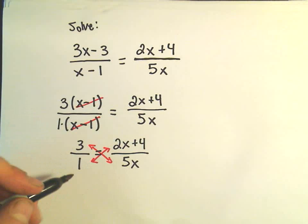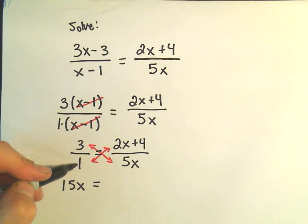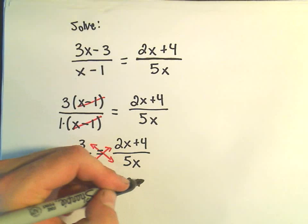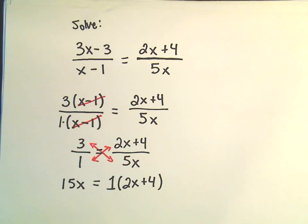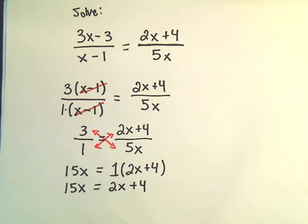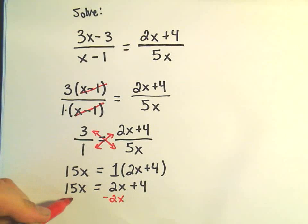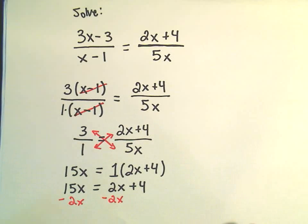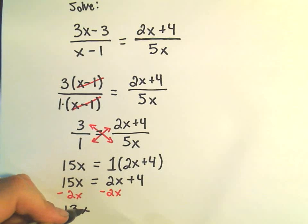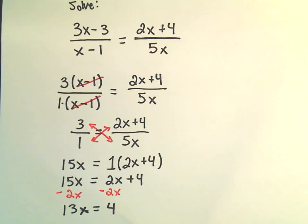If we take 3 times 5x, that'll give us 15x. We would have to take our positive 1 and multiply it by 2x plus 4. I'm going to write this step out, emphasizing that you should put this in parentheses and distribute everything out. Obviously, if you distribute out the 1, you just get 2x plus 4. Now I want to put all my x's on one side and all the numbers on the other. So I'm going to subtract 2x from both sides, giving us 15x minus 2x, which is 13x.